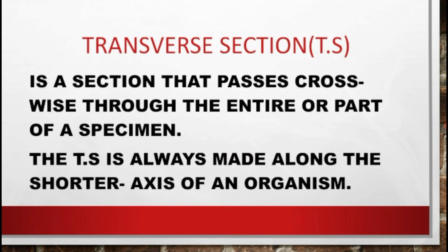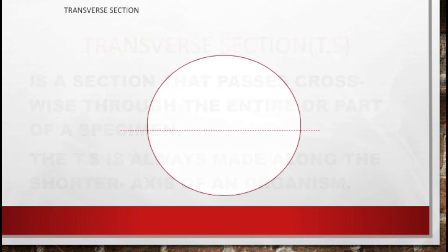The second type is the transverse section, or TS. It is a section that passes crosswise through the entire or part of a specimen. The transverse section is always made along the shorter axis of an organism — unlike the longitudinal section, which is made along the longer axis.